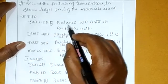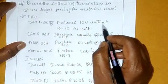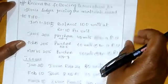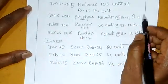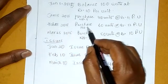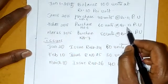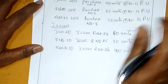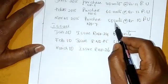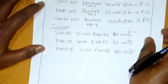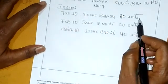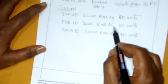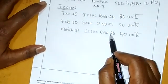1st January 2015: balance 100 units at Rs.10 per unit. January 15: purchase 40 units at rate of Rs.11 per unit. February 15: purchase 60 units at the rate of Rs.12 per unit. March 25: purchase 50 units at the rate of Rs.10 per unit. Issues: January 20, issue number 24, 80 units; February 10, issue number 25, 30 units; March 10, issue number 26, 40 units.